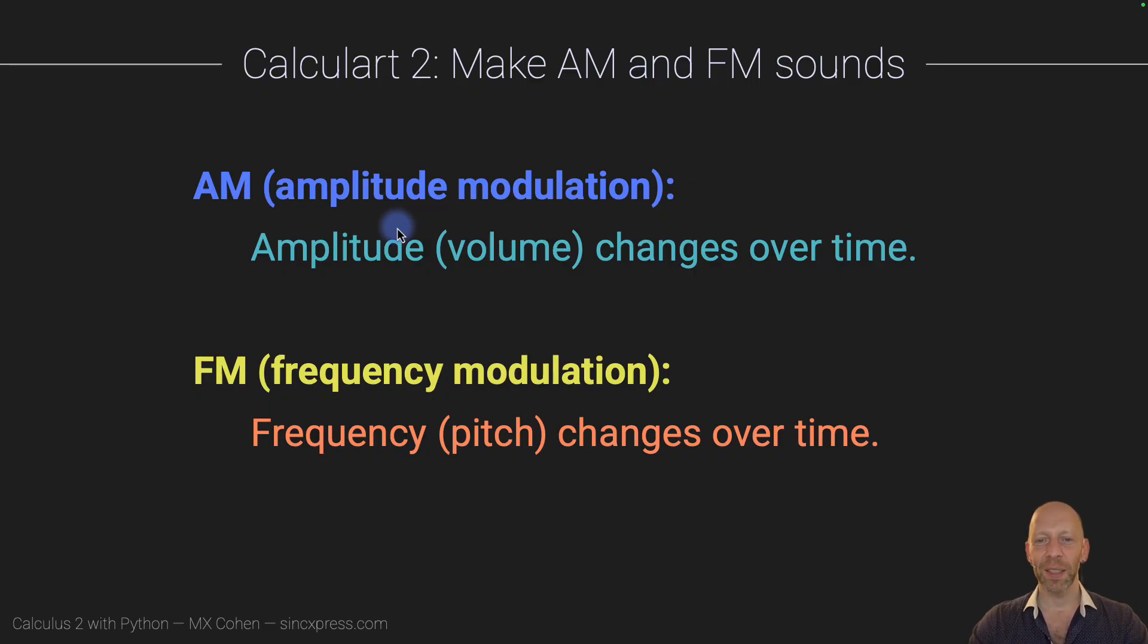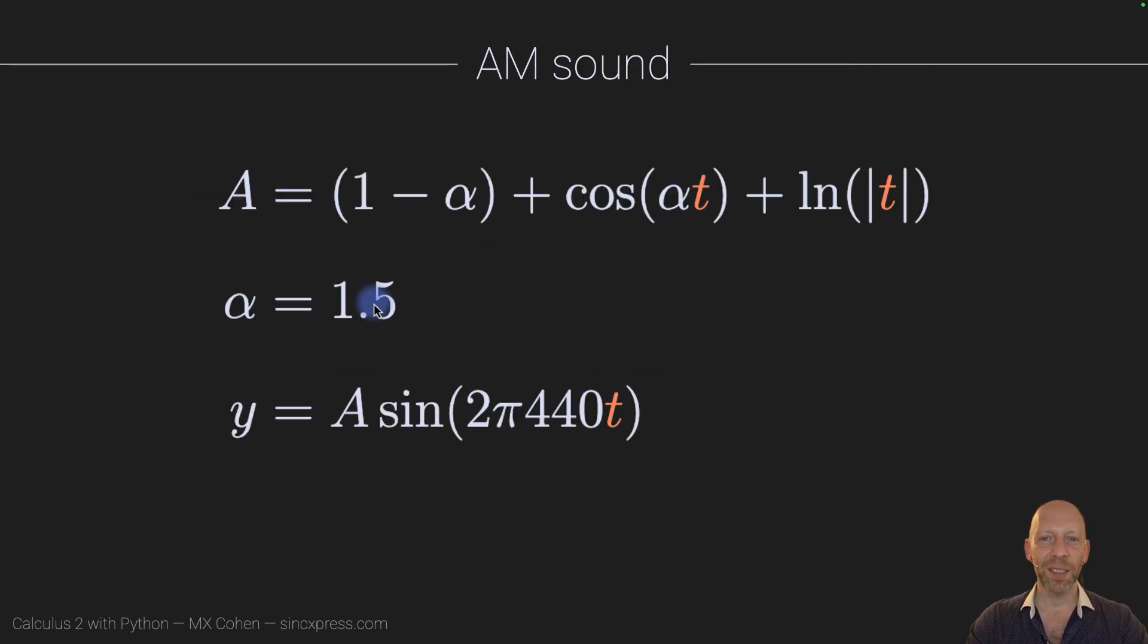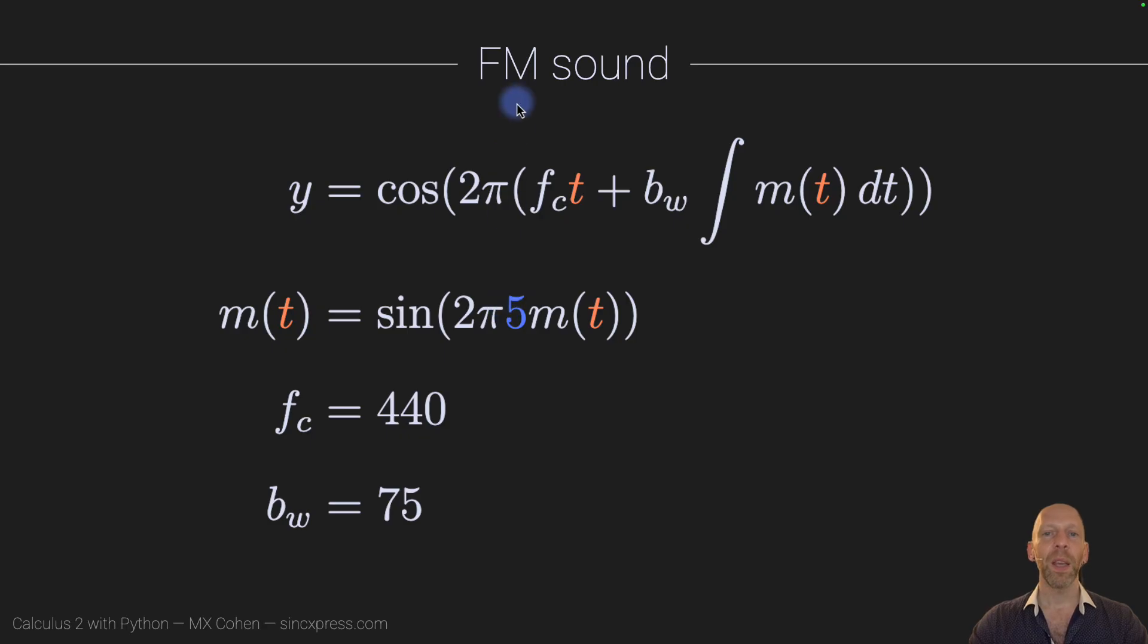Now there's a much longer engineering discussion to be had about the differences between these, when you would prefer AM versus FM, and so on. I'm just going to stick to the fun stuff here. So I'm going to show you code in a moment that basically just implements this expression here. So the AM, the amplitude modulation, is going to be basically a cosine plus the natural log of the time variable. And I'm going to start simulating time negatively. So this is going to be symmetric. And yeah, these are just some parameters that I thought was nice. This is just a tone here. So Y, this is the sound that we are going to listen to. If you forget about the A for a moment, you can see it's just a pure tone at 440 hertz. And then I'm multiplying it by this vector, and this is going to modulate the amplitude, which is going to be reflected in the volume.